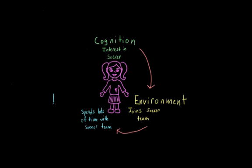As a result of being on the soccer team, she starts to spend a lot of time with the soccer players. So you can see how a cognition can lead to choosing a certain environment, which can then change our behavior.